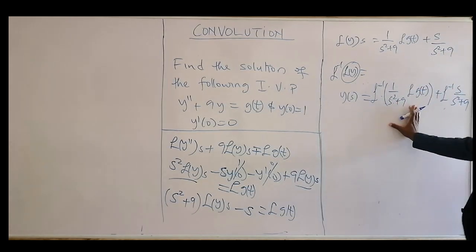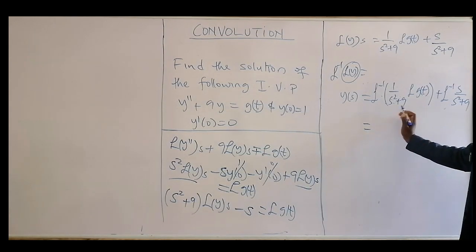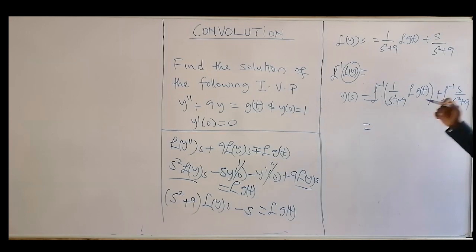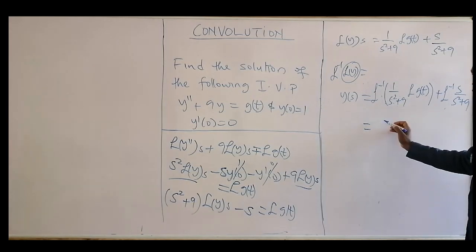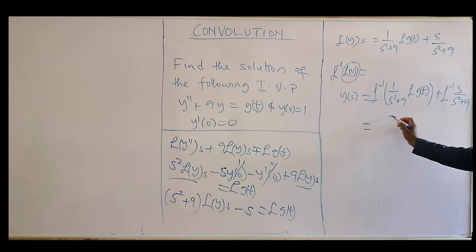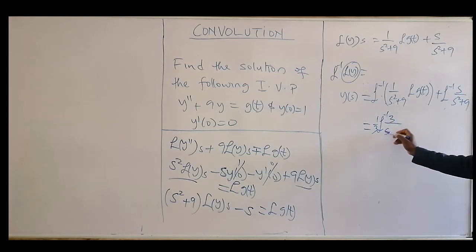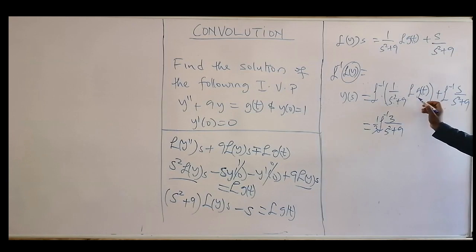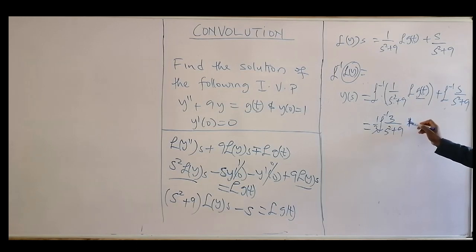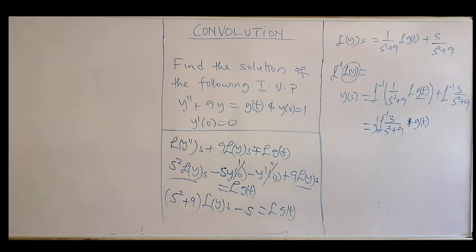For the first term, the inverse Laplace of 1/(s² + 9) gives us (1/3)sin(3t). We can manipulate this: put 3 in the numerator and take 1/3 outside, so the inverse Laplace of 3/(s² + 9) gives sin(3t). The product in the Laplace domain corresponds to convolution, so we get (1/3)sin(3t) * g(t). For the second term, the inverse Laplace of s/(s² + 9) is cos(3t).